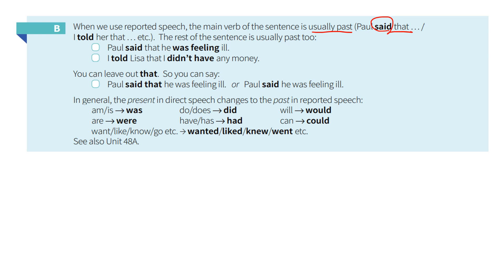The rest of the sentence is usually past also. Paul said that he was feeling ill — 'said,' 'was.' I told Lisa that I didn't have any money — 'told,' 'did not.' You can leave out 'that,' so you can simply say 'Paul said that he was feeling ill' or 'Paul said he was feeling ill.'